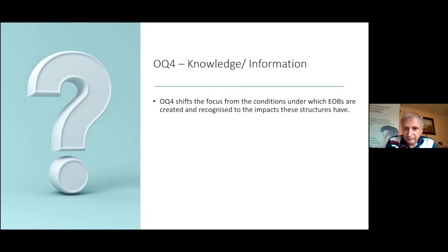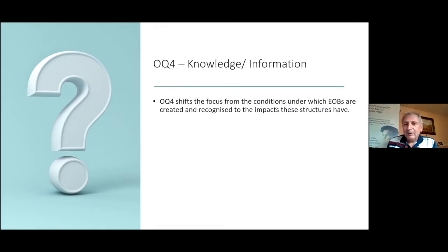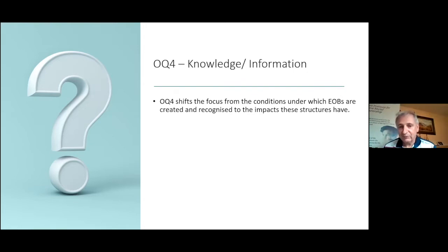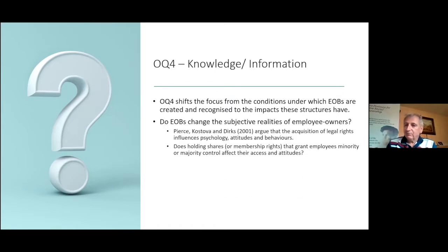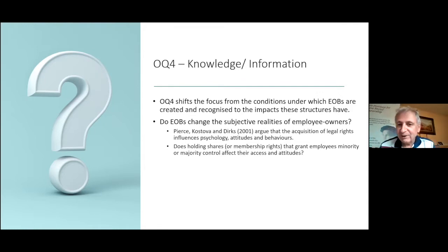John Spedan Lewis, in his book 'Fairer Shares,' had a lot to say about information and knowledge. That's the reason they have a free press and the reason managers must answer questions put to them through a publication called the Gazette. He said you can't have democracy without information and knowledge. When doing our studies we found these businesses are very forthcoming with information — almost overwhelmingly so. The acquisition of legal rights can change psychologies, attitudes, and behavior.